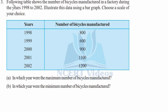Question three. The following table shows the number of bicycles manufactured in a factory during the years 1998 to 2003. The table has two columns: years and number of bicycles manufactured. Illustrate this data using a bar graph using the scale of your choice. Then find in which year the maximum and minimum number of bicycles were manufactured.